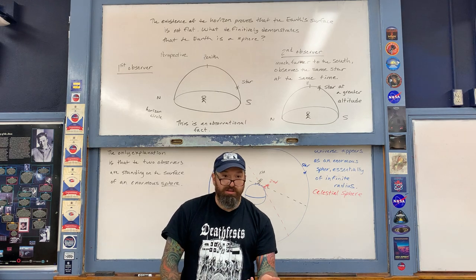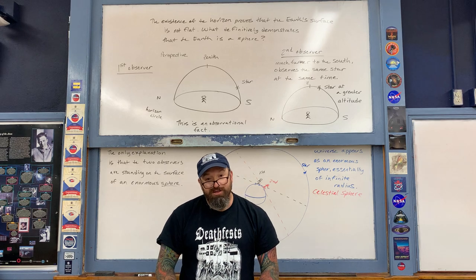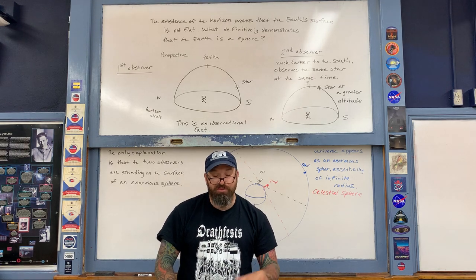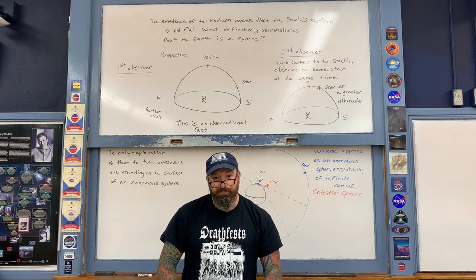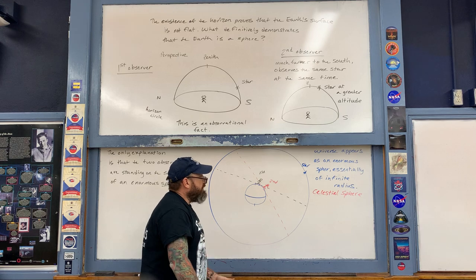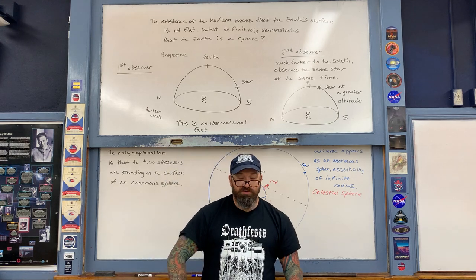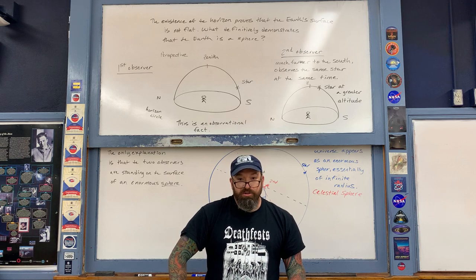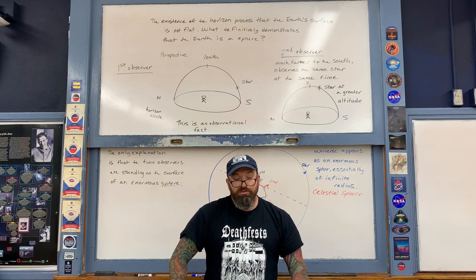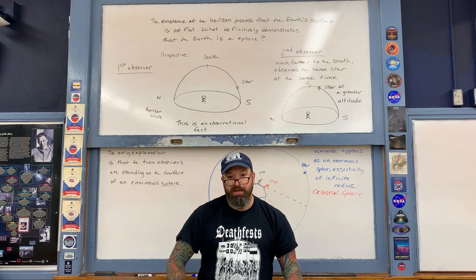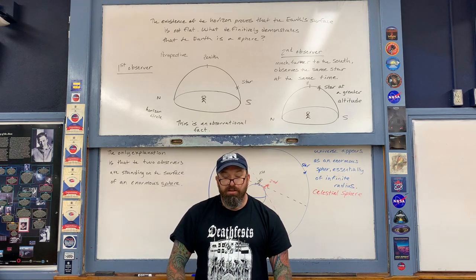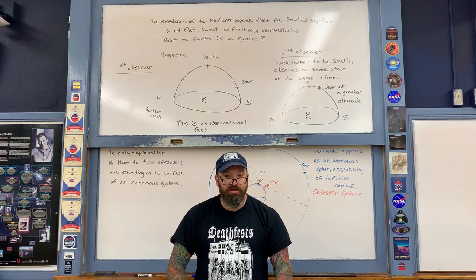One of the first cultures to notice this — because they had a large enough geographical empire to do so — was the ancient Greek civilization, which started to flourish around 500 BC. These observational facts definitively prove that the Earth is spherical. Students invariably ask why flat Earth conspiracy theories still persist. The simple answer is that people choose, for whatever reason, not to believe the observational facts that are right in front of them.